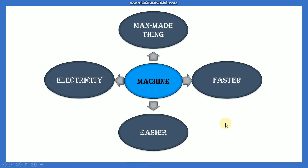So what is a machine? A machine is a man-made thing. It helps us to do our work faster. It makes our work easier. It runs on electricity.